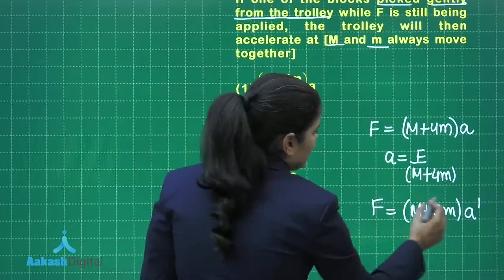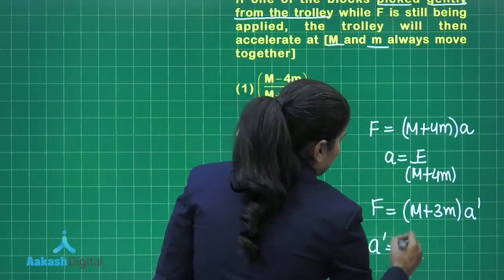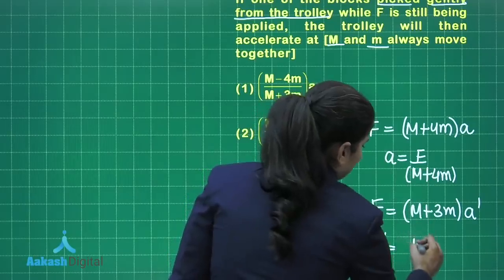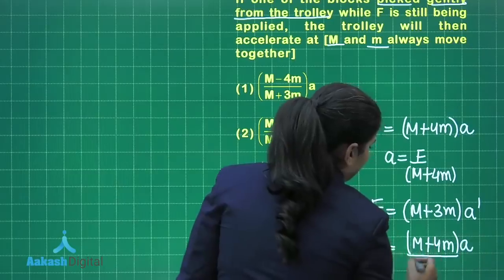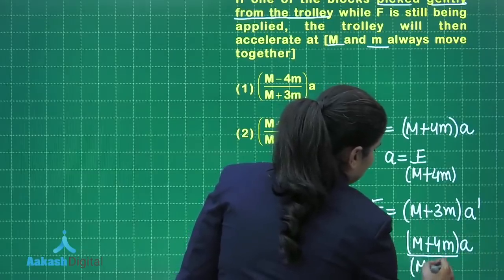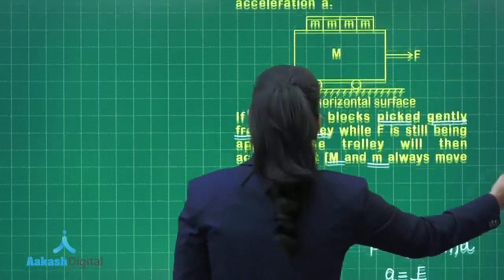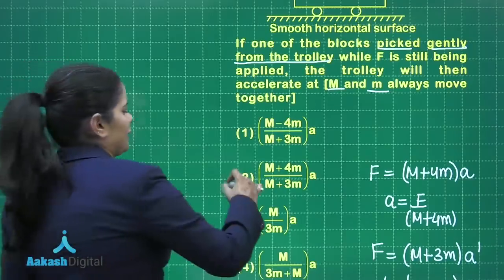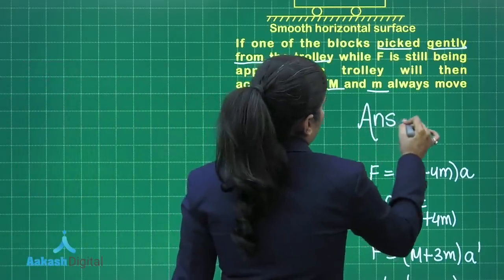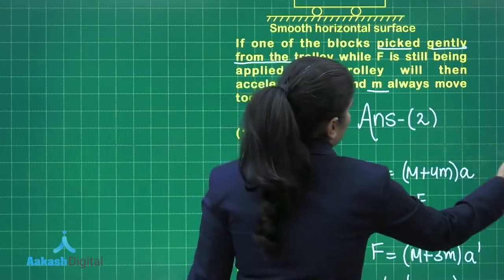This force is same, so I can write A dash as M plus 4M in the bracket multiplied by A divided by M plus 3M. If you have a look at the options, you can clearly see here that option number 2 is the correct option. I can write here that the correct answer for this question is option number 2.